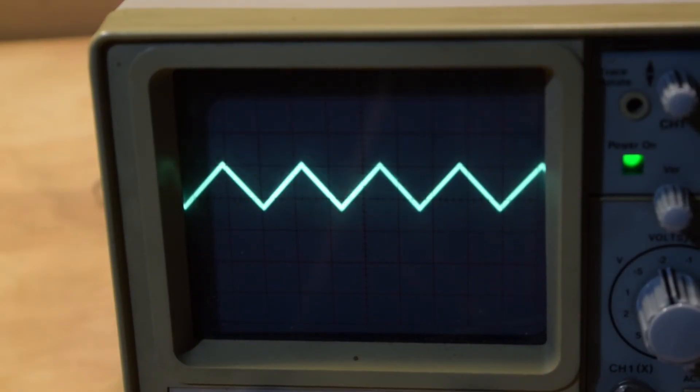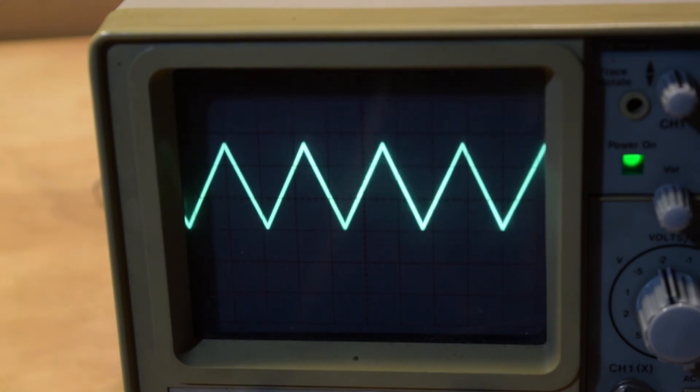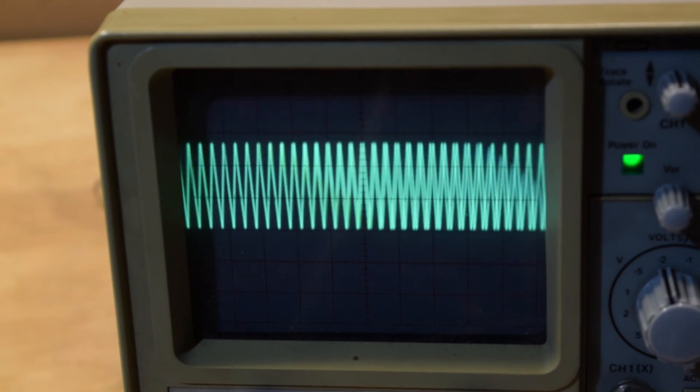Now let's look at a different type of signal. I just switched the sweep generator to a triangle wave output. I really like the look of this signal. Once again I'm messing with the amplitude of the output as well as the frequency, and you can see how that affects the signal.